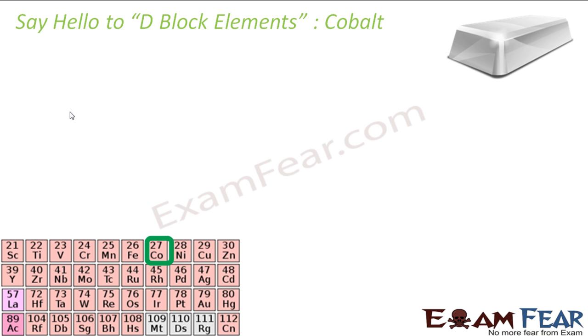Talk about cobalt. Atomic number 27, symbol as Co. It is found again in a combined state, hard, silver and green metal. And it is also used in jewelry.